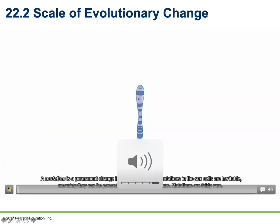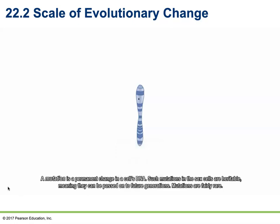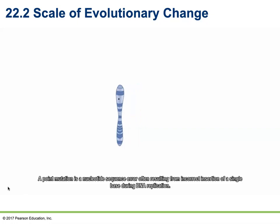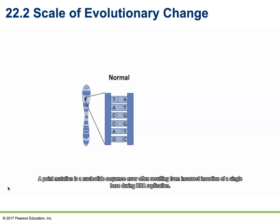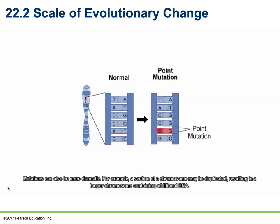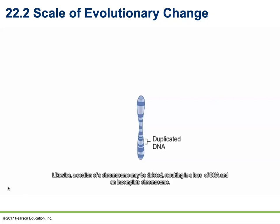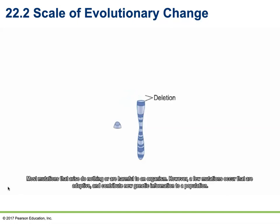A mutation is a permanent change in a cell's DNA. Mutations in sex cells are heritable, meaning they can be passed on to future generations. Mutations are fairly rare, but they are critical to evolution because they provide the only means for creating new genetic information. A point mutation is a nucleotide sequence error often resulting from incorrect insertion of a single base during DNA replication. Mutations can also be more dramatic — a section of a chromosome may be duplicated, resulting in a longer chromosome, or deleted, resulting in loss of DNA. Most mutations do nothing or are harmful, but a few are adaptive and contribute new genetic information to a population.